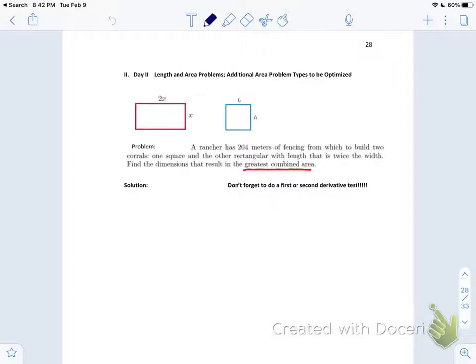That's your tip off. Greatest combined area is what we want to do. So our objective function is that our area is going to equal the area of the rectangle (2x times x, so 2x squared) and the area of the square (h squared). So that's our objective. What's our constraint?